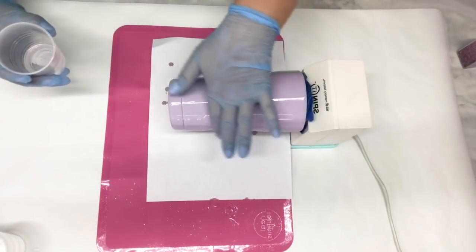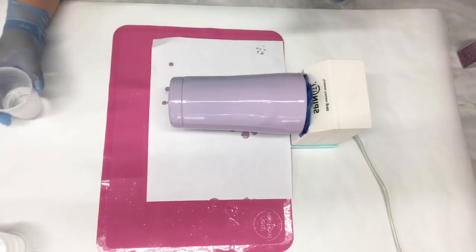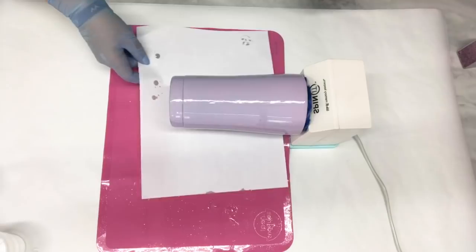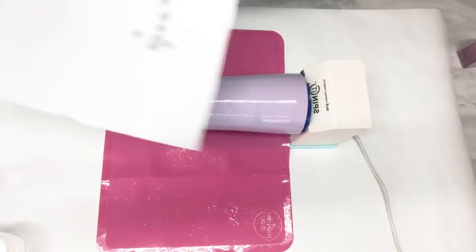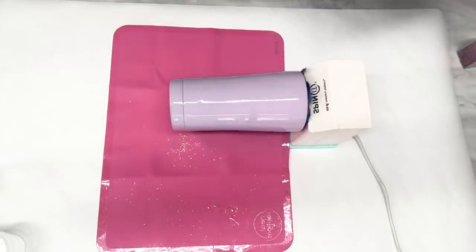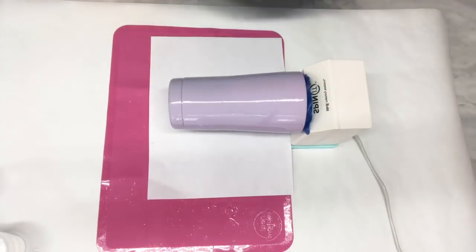Now we've got a very thin coat of epoxy on and we're ready for our glitter. The reason I put this piece of paper down is you can see all the epoxy that has dripped.